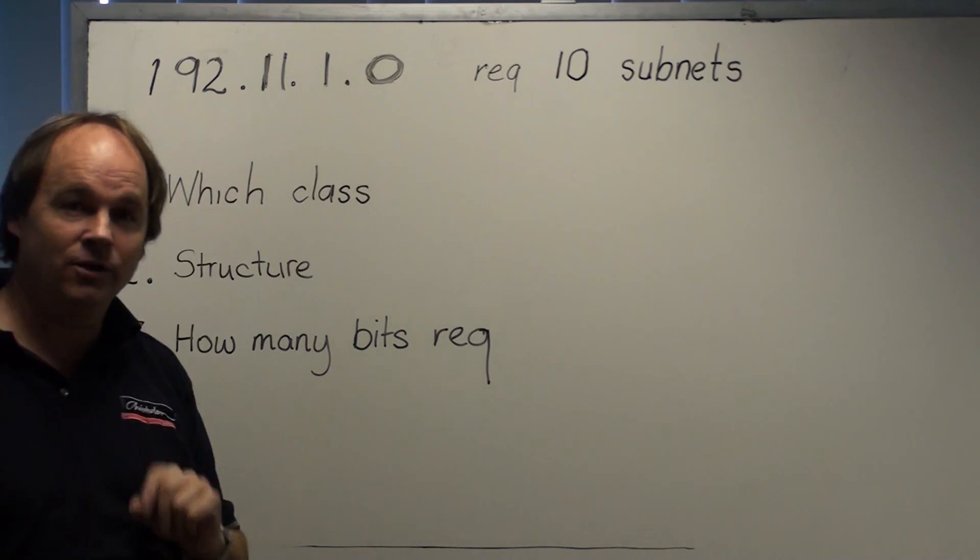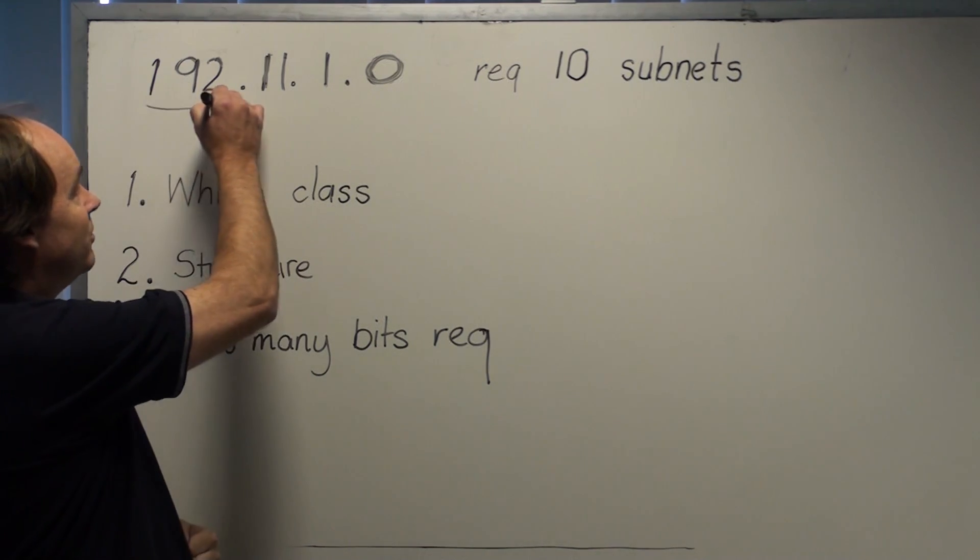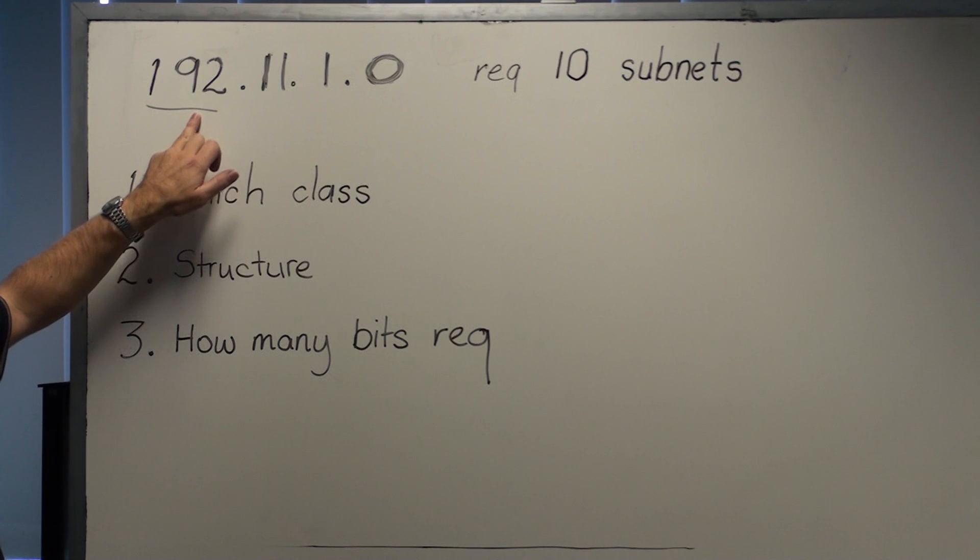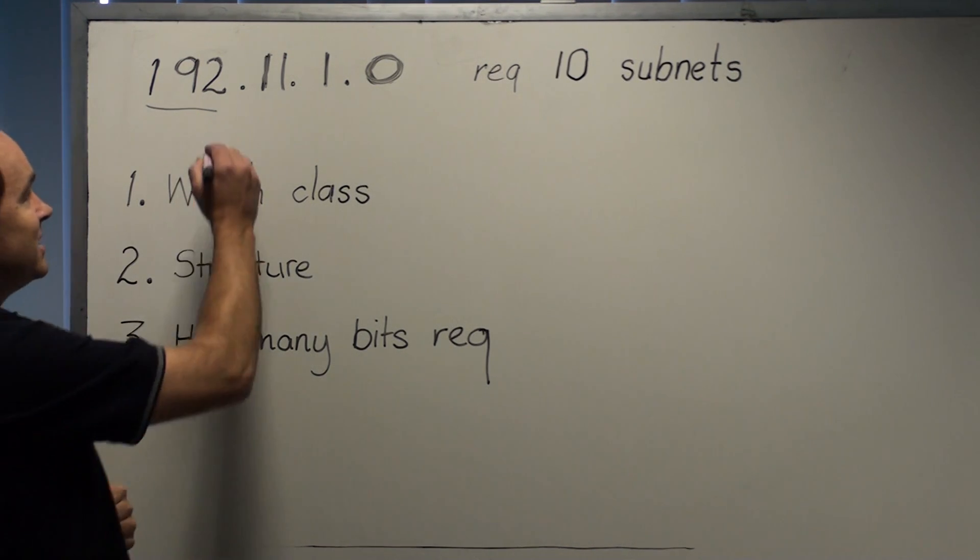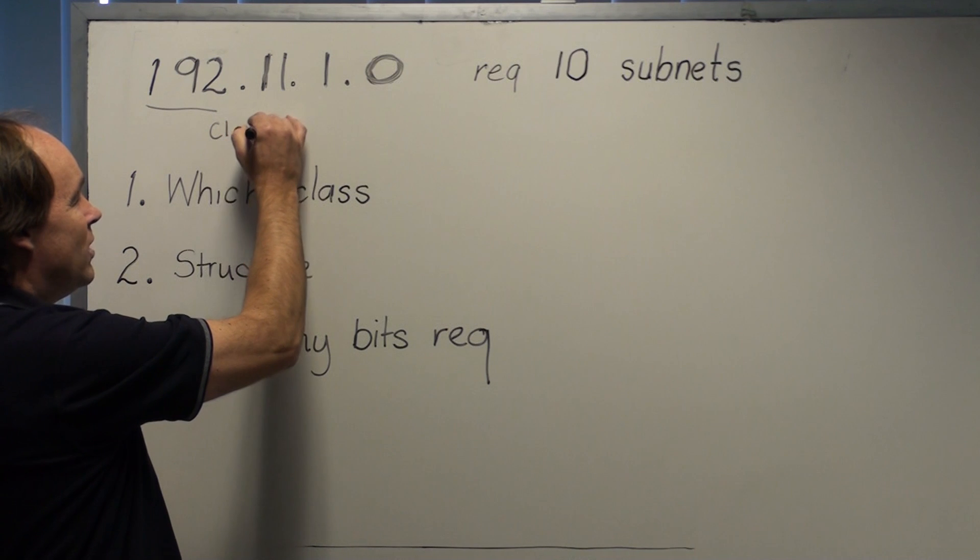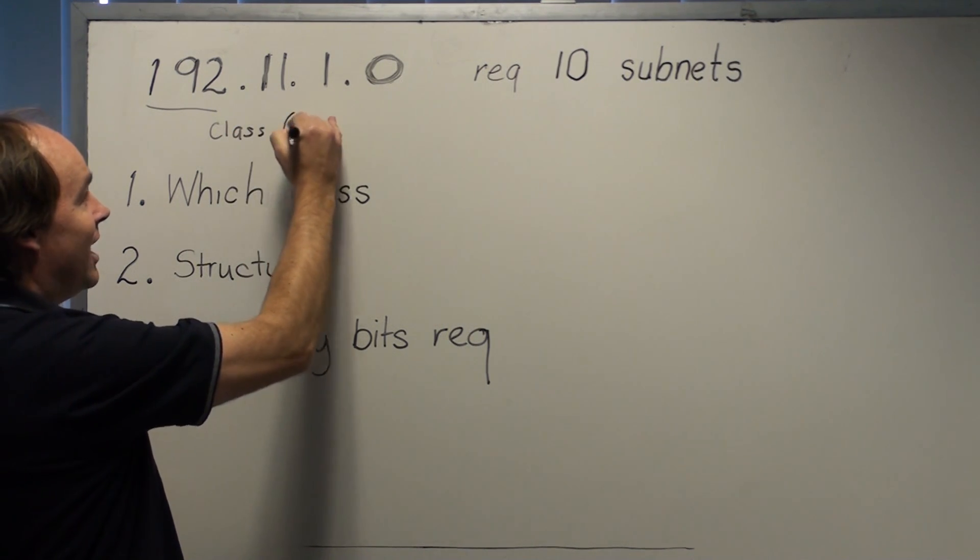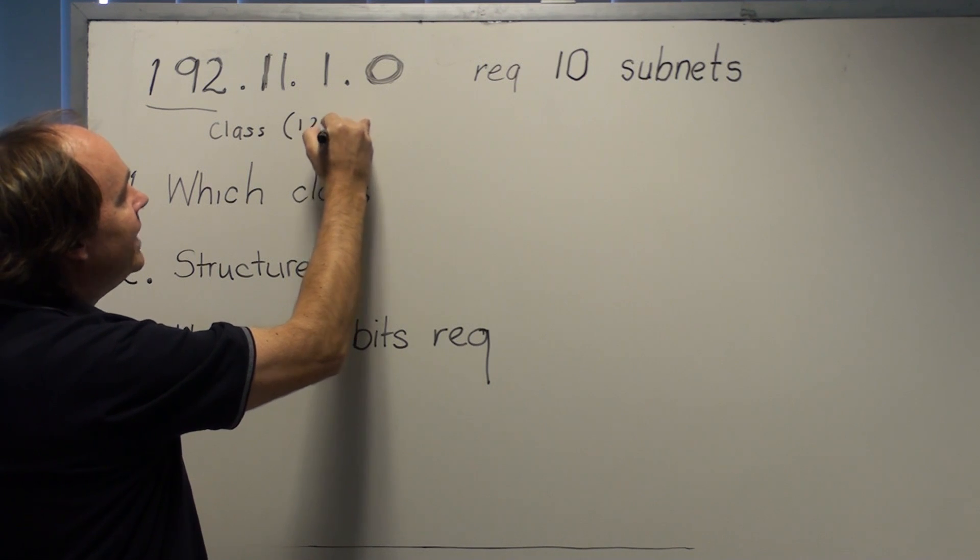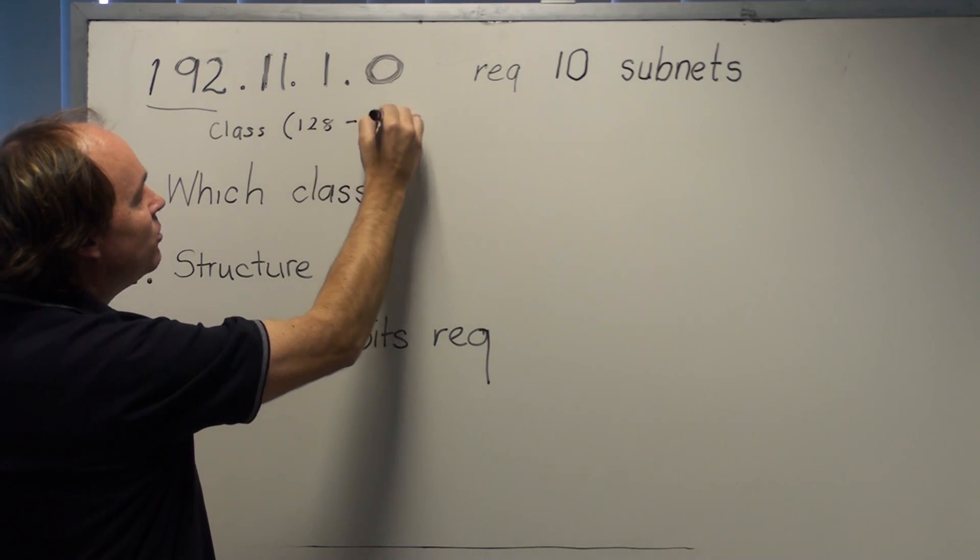What we need to do there is look at the number that it begins with, always the first octet. In this case this number is 192. And if we recall class B, it's always the defining class for me, runs from 128 to 191.